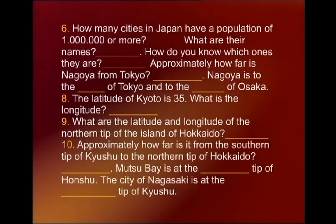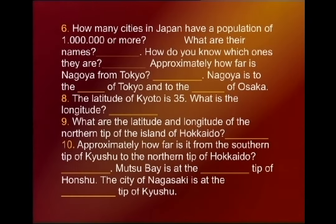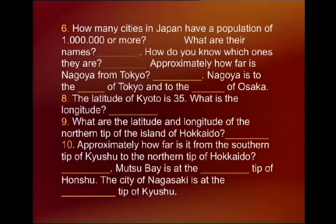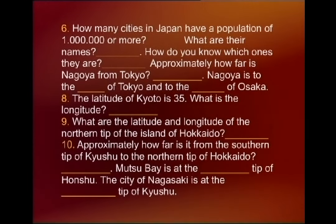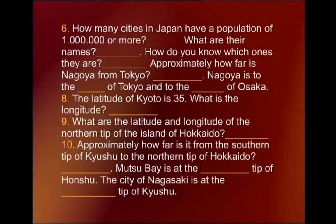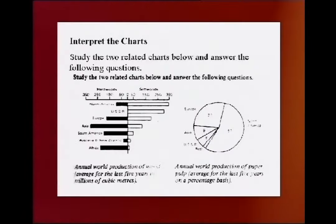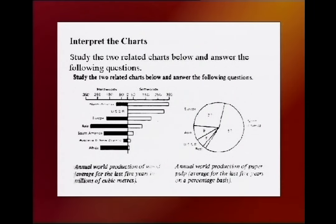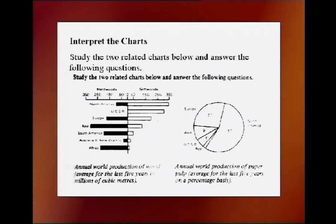Mutsube is at the northern tip of Honshu, and the city of Nagasaki is at the western tip of Kyushu. Look at the charts, study them, and decide whether the statements I am going to read out are true or false.